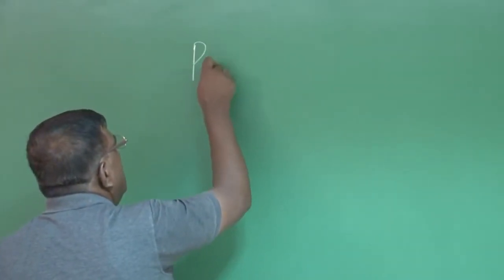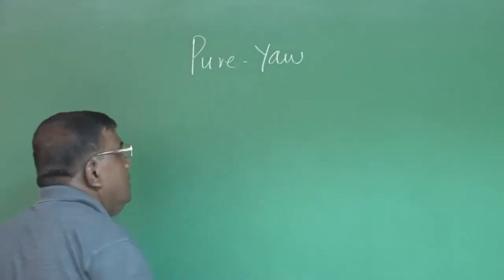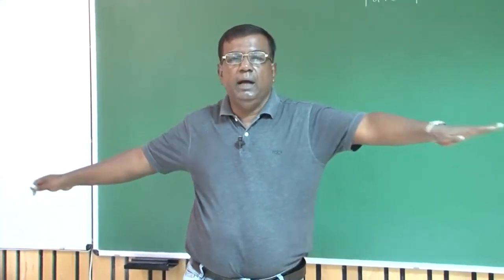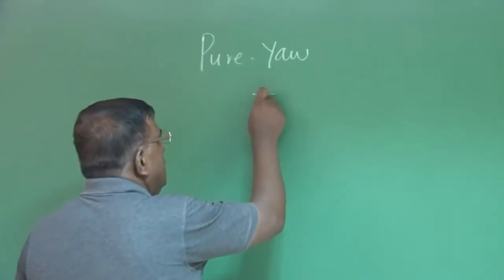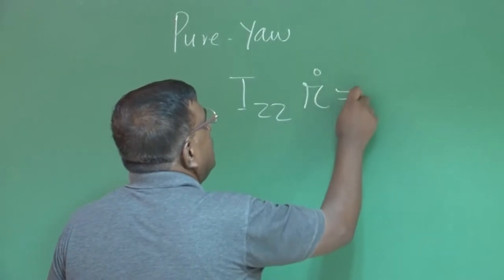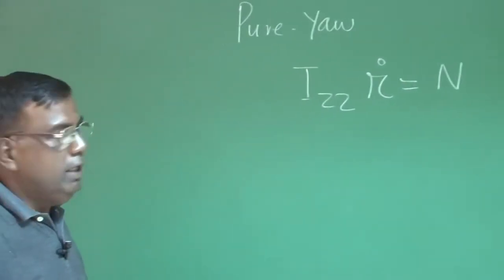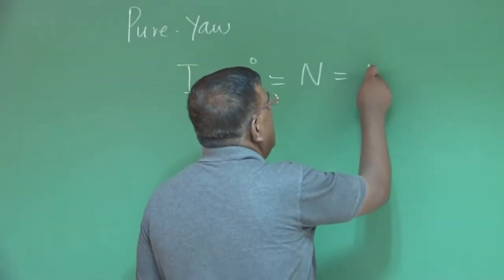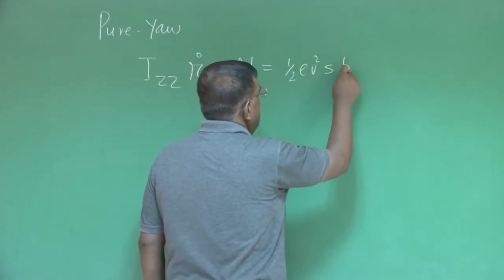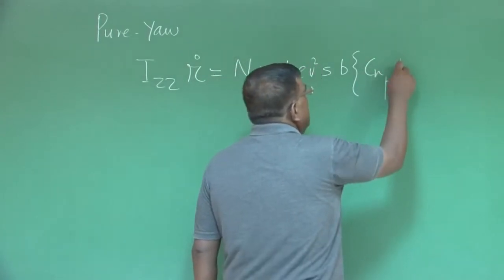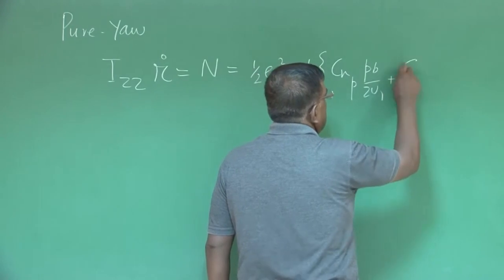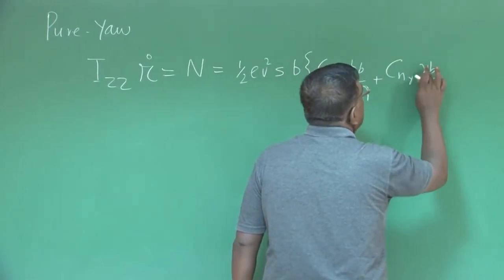We have already done the longitudinal case. If I take pure yaw — that is, only yaw motion is allowed — and as you know, as far as yaw is concerned, when the right wing goes back, that is the positive yawing moment. Izz * r_dot equals yawing moment N, where r is the yaw rate. And N can be written as: half * rho * V^2 * S * b * [Cnp * Pb/(2u1) + Cnr * Rb/(2u1)].